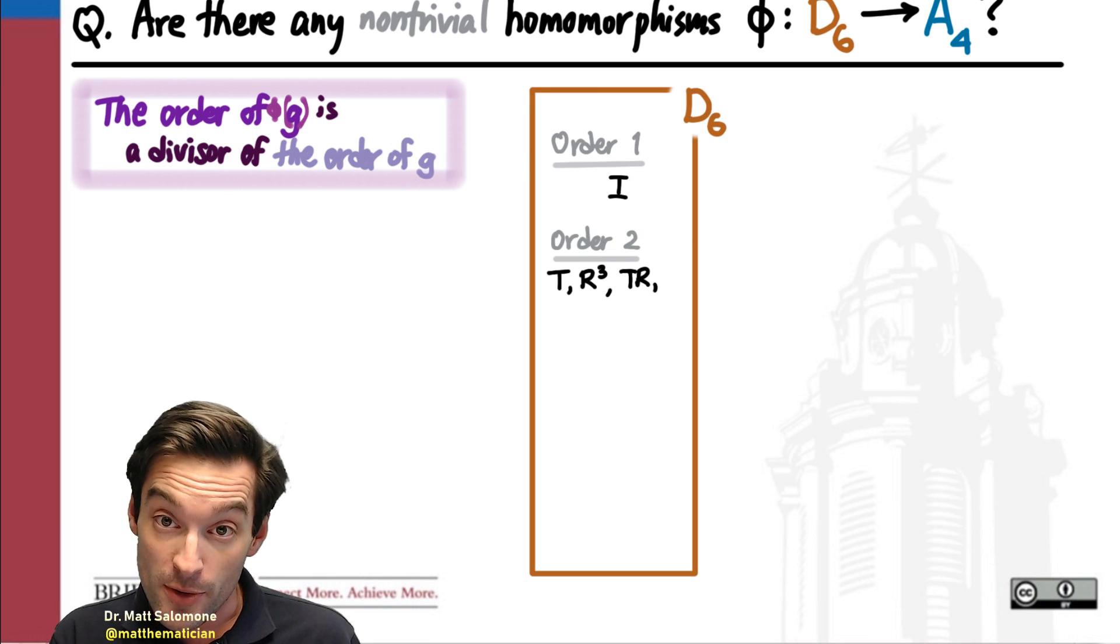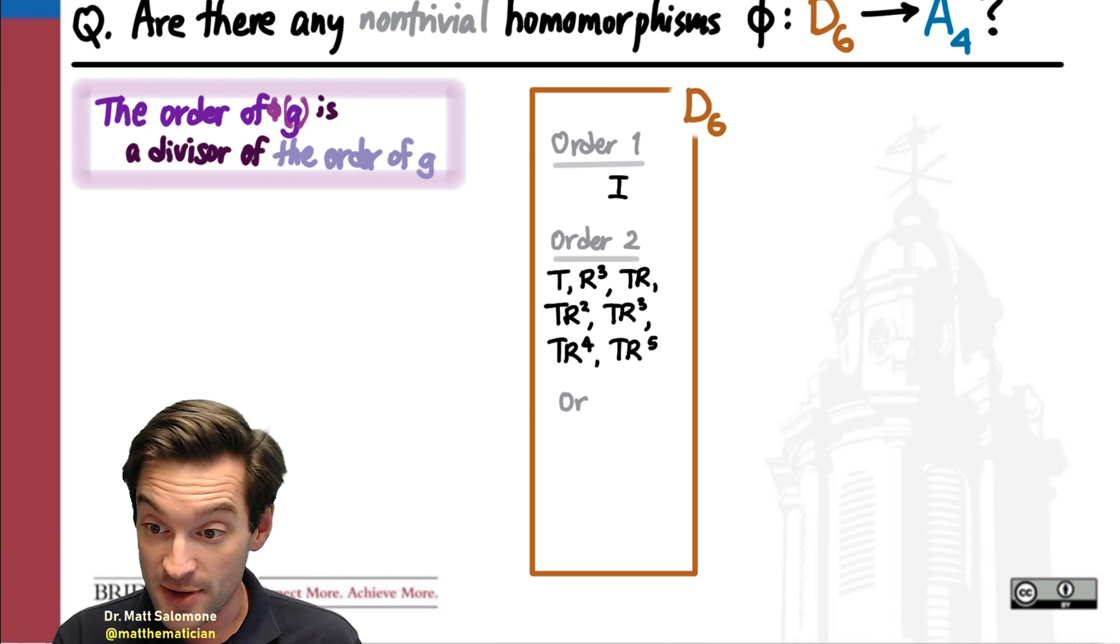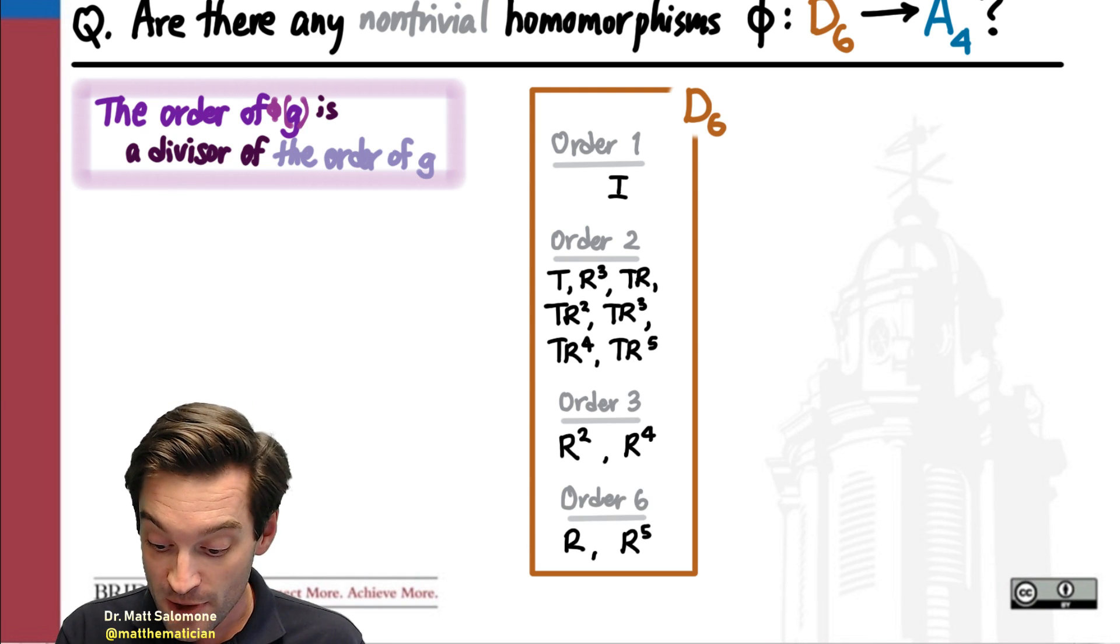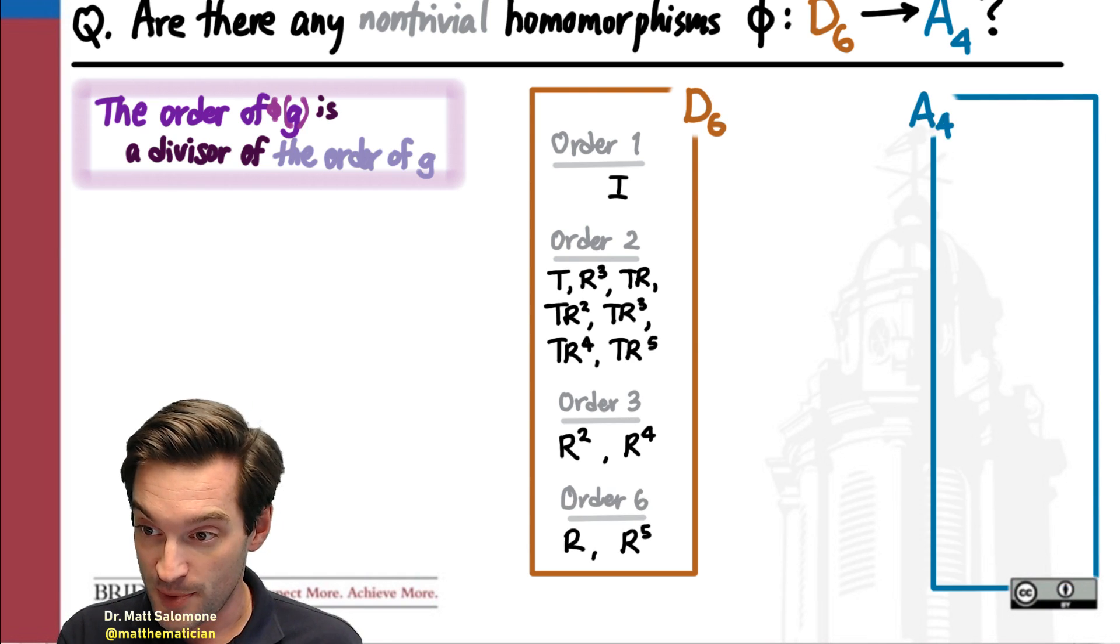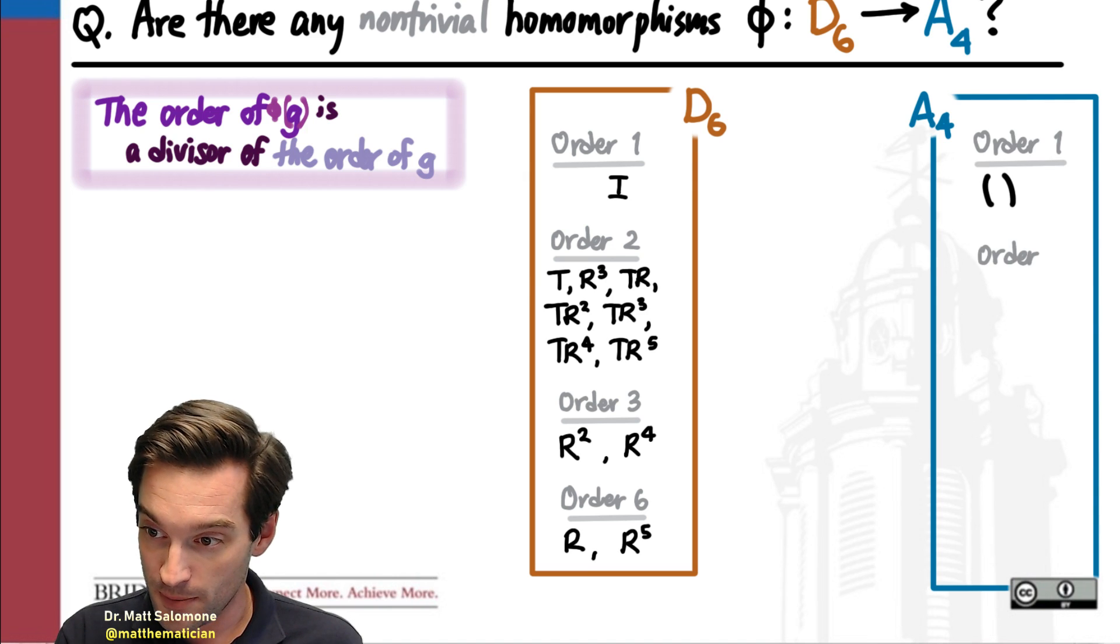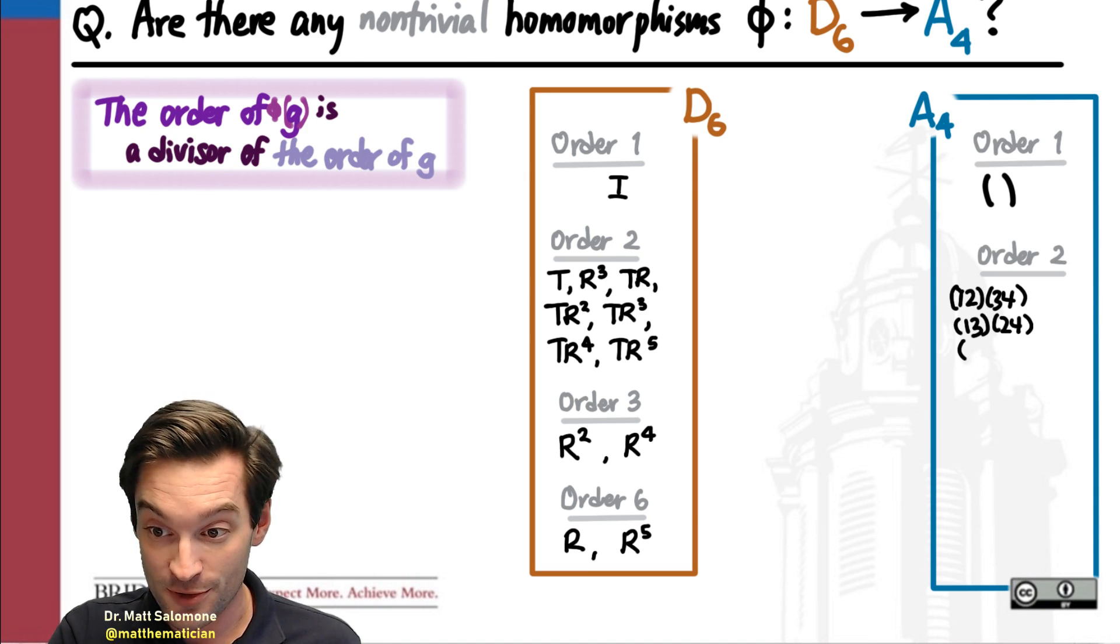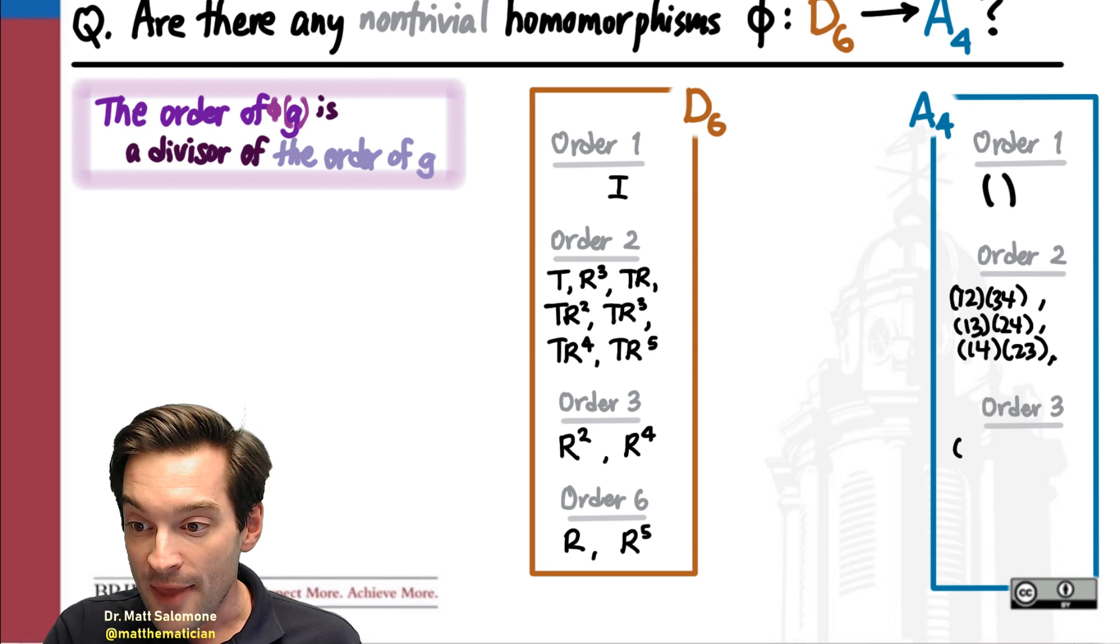So we could explore this question just by listing all the elements in D6 and listing all the elements in A4 and figuring out what their orders are. This would just be relatively busy work, but otherwise a straightforward kind of exercise.